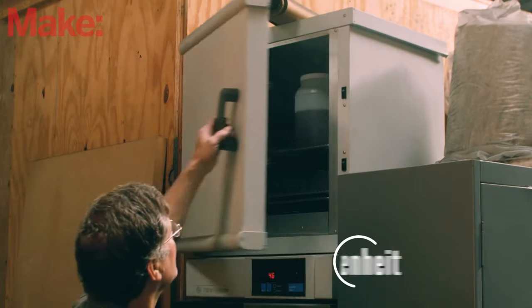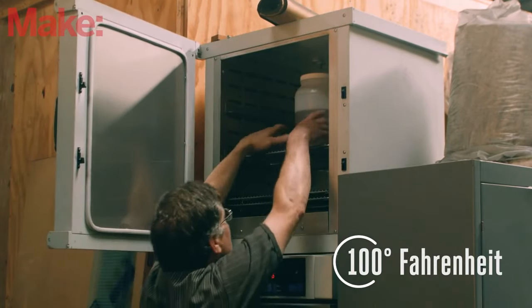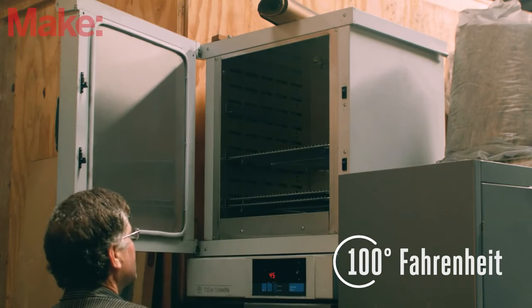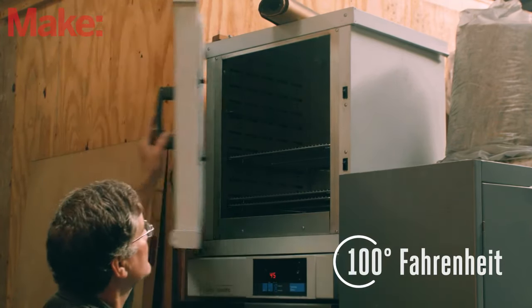Start by pre-warming the honey, which will make it easier to pour. You'll want it about 100 degrees Fahrenheit. If you have access to a low-temperature oven, you can use this or a water bath. Just make sure it doesn't overheat.